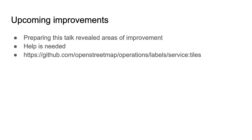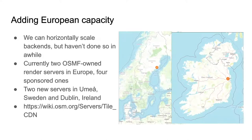This talk has been about the usage of the standard layer, but what's going to be changing from the OWG? 73% of our render load is in Europe, so it needs more capacity than elsewhere. Right now we have two OSMF-owned servers in Europe, with four donated servers in Europe, two in Australia, and one in the US. The donated servers in Europe have fairly low capacity. We have two new servers that will be adding capacity, hosted by the Academic Computing Club in Umeå in northern Sweden and by the OSMF in Dublin, Ireland.